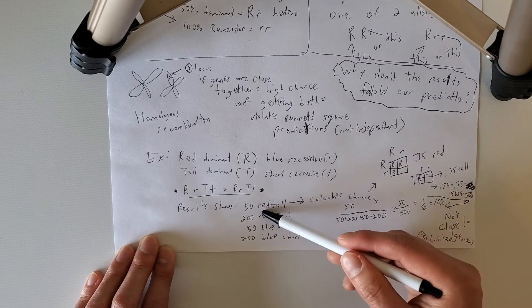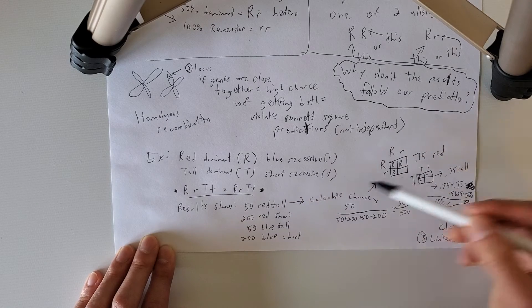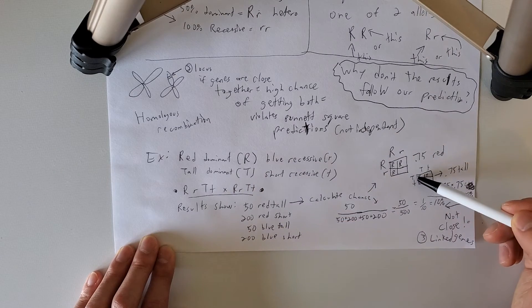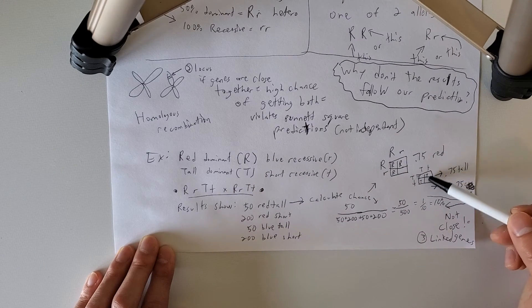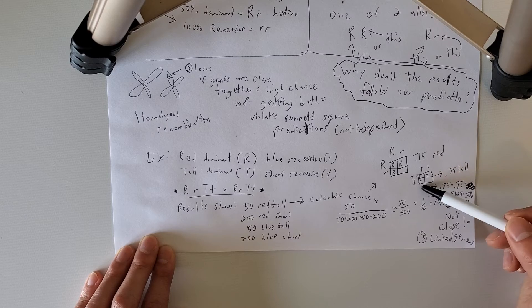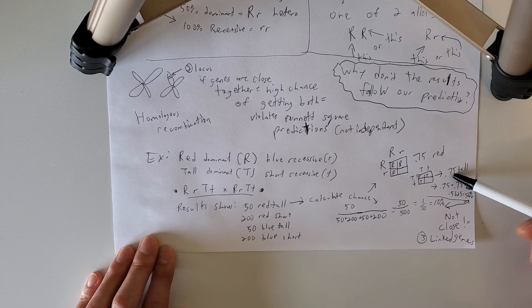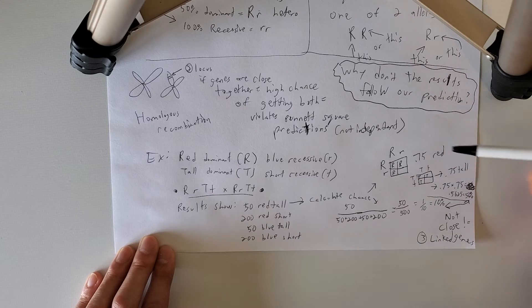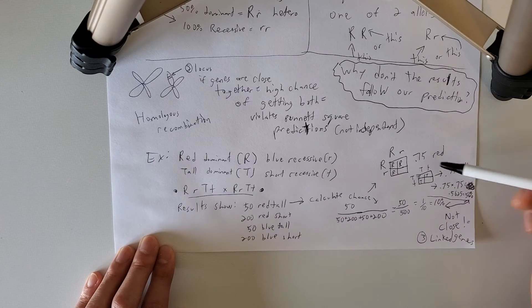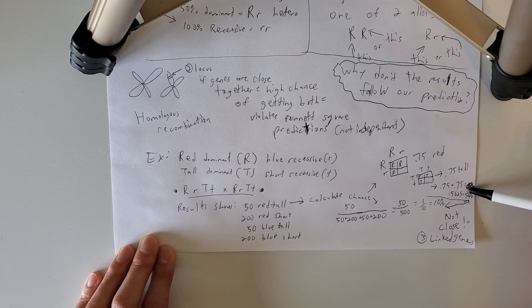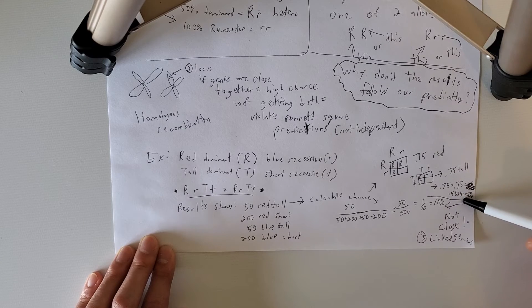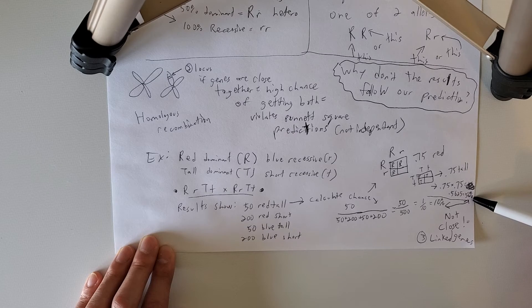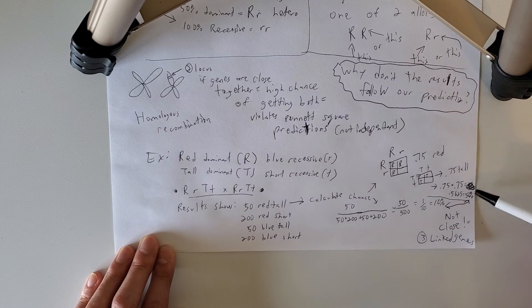Okay, now I need to calculate my chance of tall. Tall is one big T, one small T, one big T, one small T. So three out of the four boxes have the capital T. So it's a 0.75 chance of tall. So if I want to know red and tall, I'm going to multiply 0.75 times 0.75, I get 0.5625, which is about 56.25% chance of having a red tall offspring.